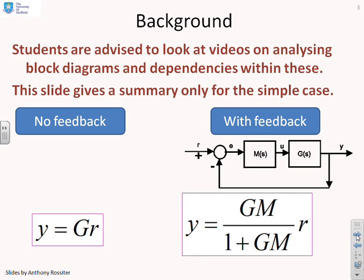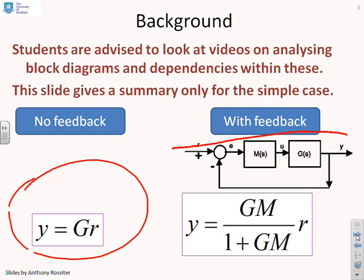Now a piece of background just to remind you this is the context we've got. If there's no feedback with the system transfer function g of s we've got a relationship between the output and the input of this form y equals gr. When you introduce feedback then you end up with a relationship something like this: y equals gm over 1 plus gm times r.